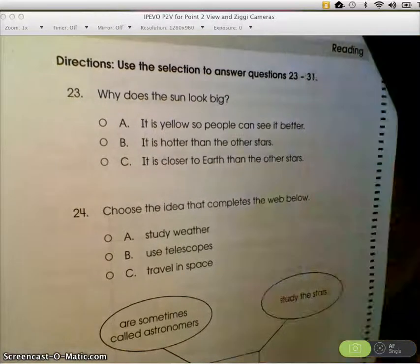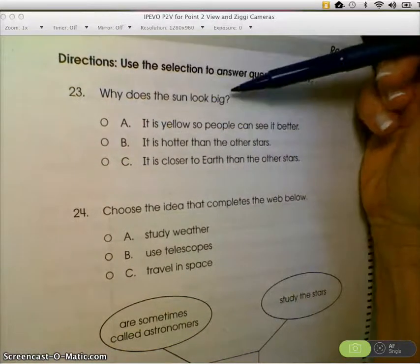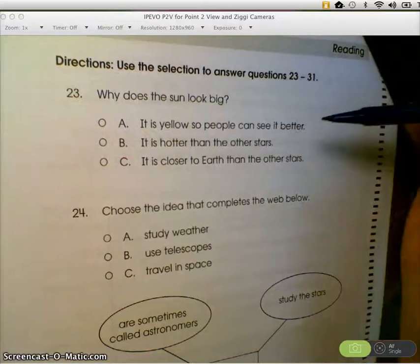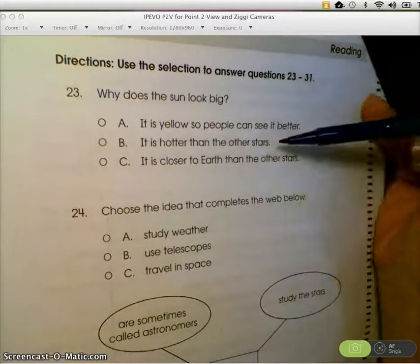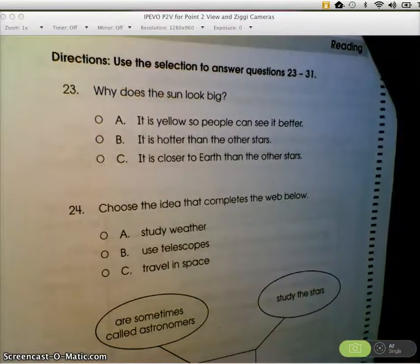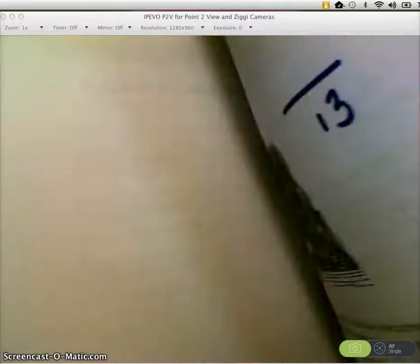And here we go. Question 23. Why does the sun look big? Choices. It's yellow so people can see it better. B, it's hotter than the other stars. Or C, it is closer to Earth than the other stars. I found this answer at the end of the first page. I'm going to go back there. You flip too.